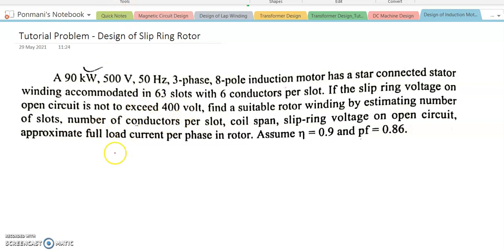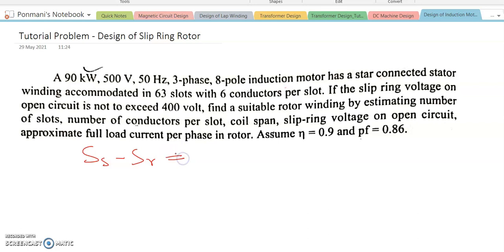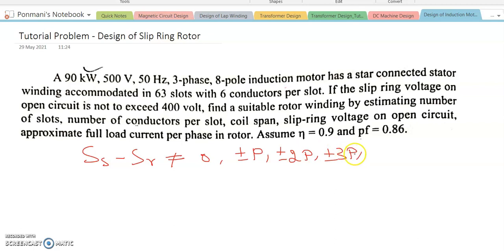To calculate the total number of rotor slots, we use the derived condition that the difference between stator slots SS and rotor slots SR should not be equal to 0, plus or minus p, plus or minus 2p, plus or minus 3p.